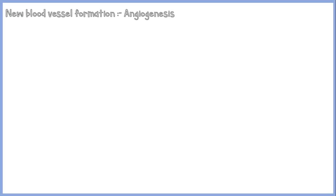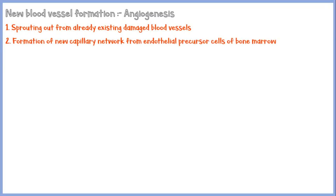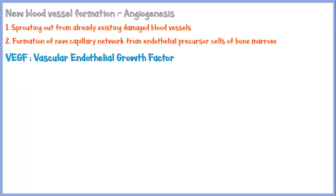The process of new blood vessel formation is called angiogenesis, and it occurs via two mechanisms: sprouting out from already damaged vessels, and formation of a new capillary network from endothelial precursor cells of bone marrow. VEGF, or vascular endothelial growth factor, is the principal mediator responsible for angiogenesis. It is secreted by mesenchymal and stromal cells in the granulation tissue.